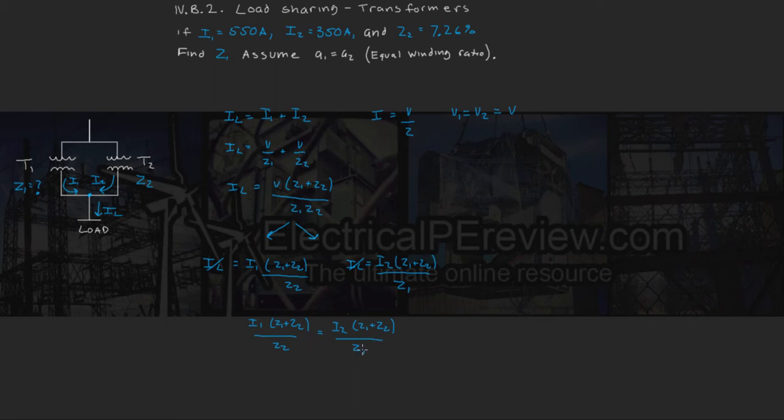And since here we're solving for Z1, we're going to set this equal to Z1, and we're going to have Z1 equals I2 times Z1 plus Z2 over I1.